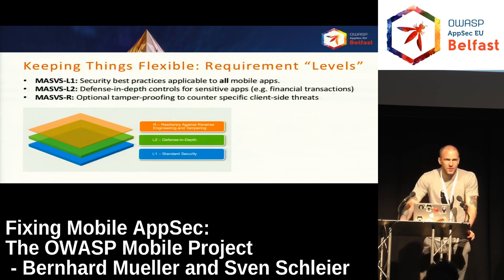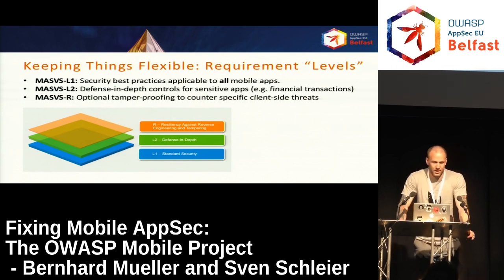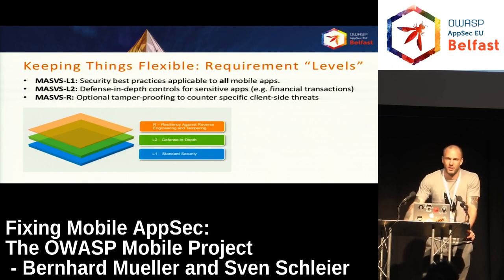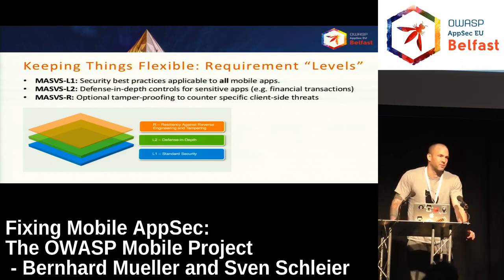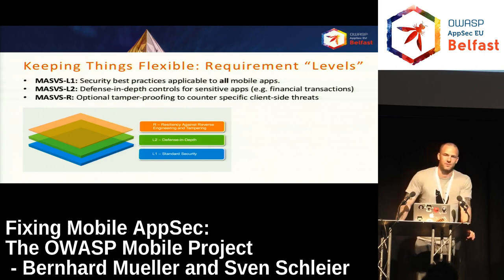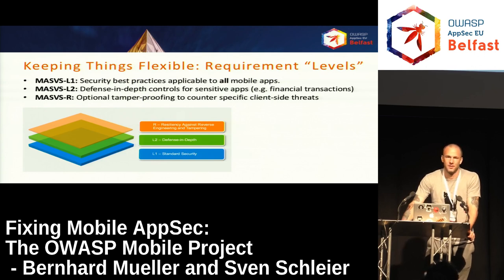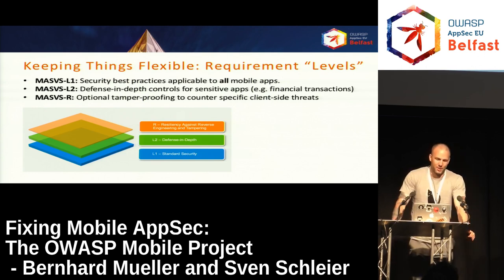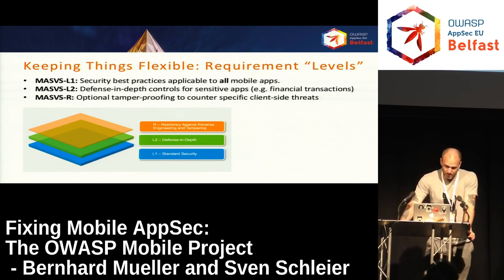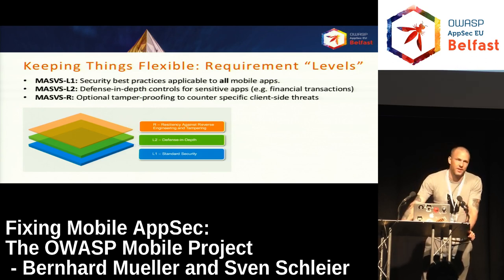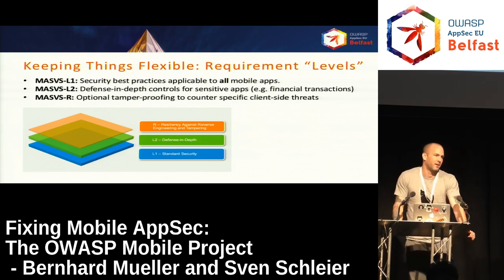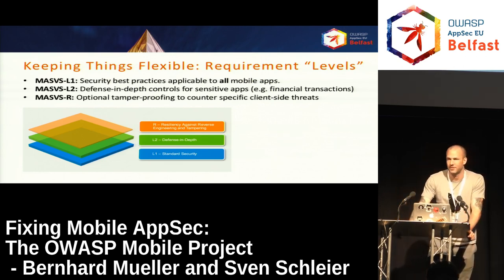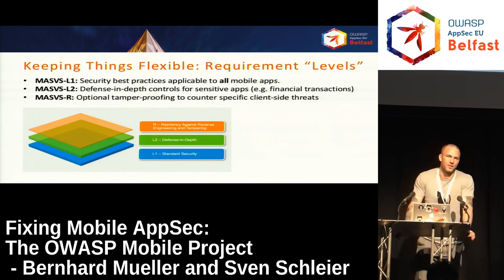We have grouped these three types of controls into layers. L1 contains all the security best practices applicable to all mobile apps — for example, you should never dump plain text passwords into application logs and never send passwords in plain text over the network. Level two contains defense-in-depth controls that may be necessary if you have apps with highly sensitive functionality or data, such as online banking, where you'd want to introduce things like 2FA, step-up authentication, or SSL pinning.